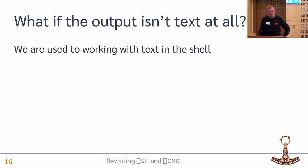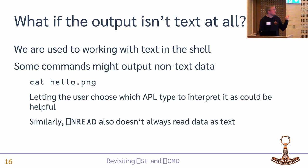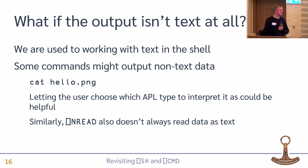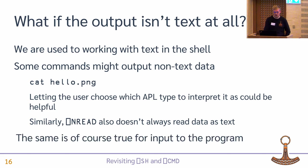What if the output isn't text at all? We're so used to working with text when working in a shell, but if I cat a PNG file, the output wouldn't be text — it would just be PNG data. Letting the user choose to interpret the output from the command as a different type might be useful. Similarly, when we read data from a file, we don't just assume it's text — we allow the user to specify the type. And of course this is also true for input to the program: it might not be text.